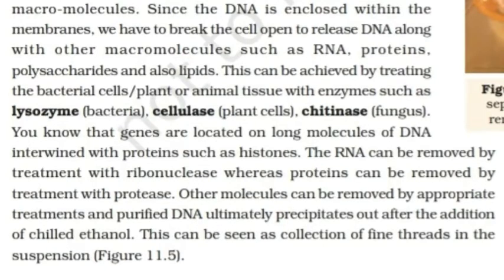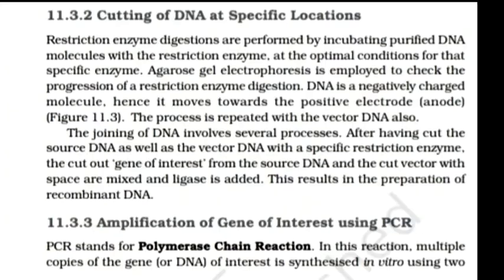The purified DNA can be seen as a collection of fine threads in the suspension. Restriction enzyme digestion is performed by incubating purified DNA molecules with the restriction enzyme at optimal conditions for the specific enzyme. Agarose gel electrophoresis is employed to check the progression of a restriction enzyme digestion. DNA is a negatively charged molecule, hence it moves towards the positive electrode (anode). The same process is repeated with the vector DNA. After cutting both the source DNA and the vector DNA with the specific restriction enzyme, the cut gene of interest and the cut vector are joined using DNA ligase, resulting in the preparation of recombinant DNA.